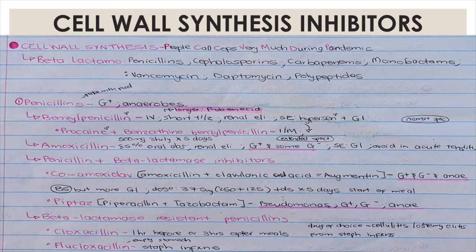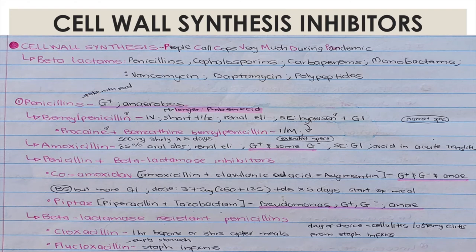Amoxicillin is 85% absorbed orally and is also excreted by the kidneys. The dosage is 500 mg eight-hourly for five days — ensure it is taken at the correct times to prevent resistance. It covers gram positive and some gram negative, making it an extended-spectrum antibiotic. Side effects are GI; avoid use in acute tonsillitis because it causes side effects.